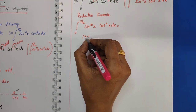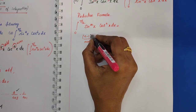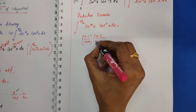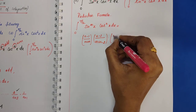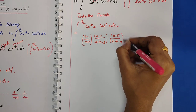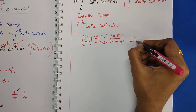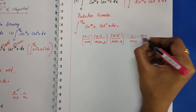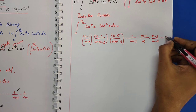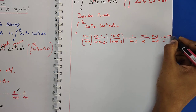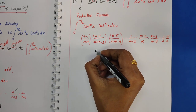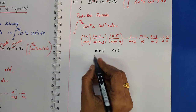The reduction formula for both m and n even is: (n−1)/(m+n) × (n−3)/(m+n−2) × (n−5)/(m+n−4) × ... × 1/2 × (m−1)/m × (m−3)/(m−2) × ... × 1/2 × π/2. With m=4 and n=6, substitute into this formula.